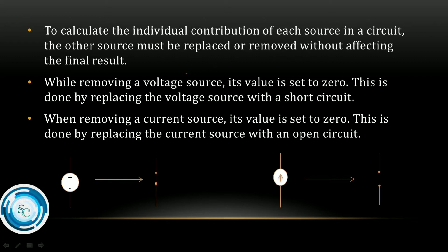If we consider one source, we can calculate the effects of that source and replace the other source without affecting the final result. While removing the voltage source, its value is set to zero — that value is zero.